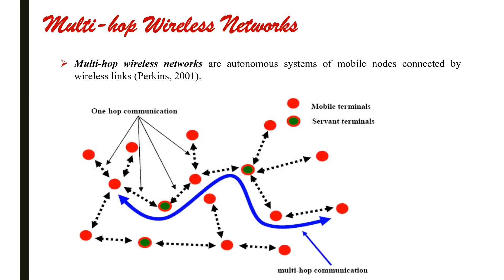In a Multi-Hop Wireless Network, two nodes can directly communicate with each other if they are close enough, or through one or more intermediate nodes that double as routers if they are not within radio range. Let's take a look at this figure. Notice that for this node to be able to communicate with this node on the other side, the communication must pass through a number of mobile and service terminals. This is the fundamental concept of Multi-Hop Wireless Networks.